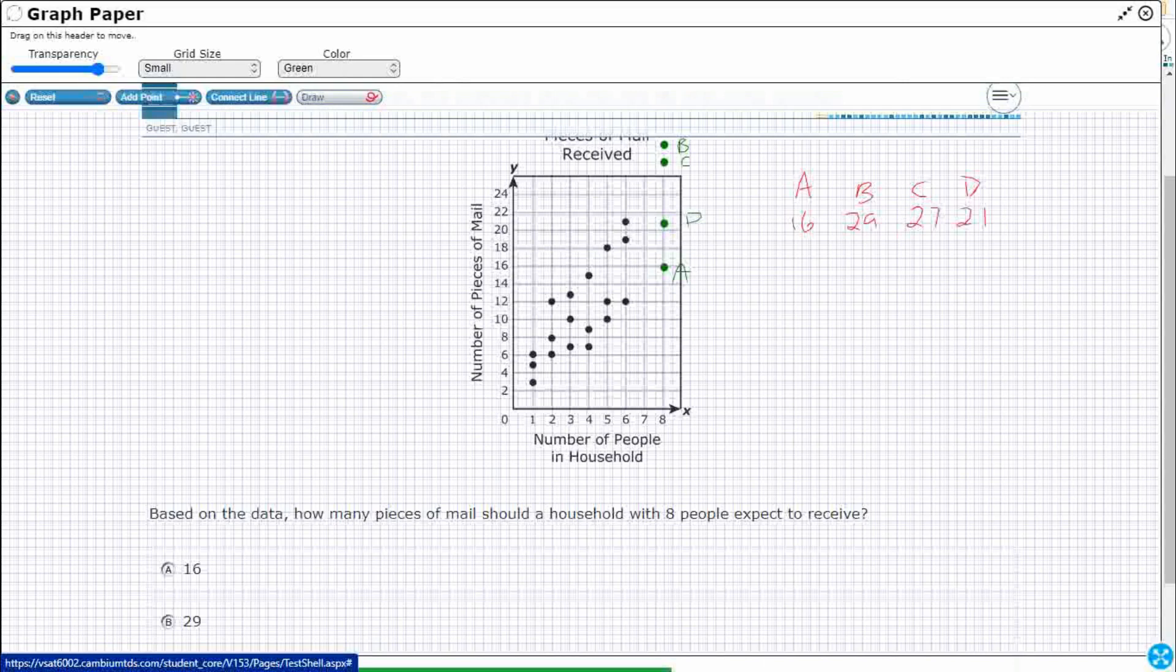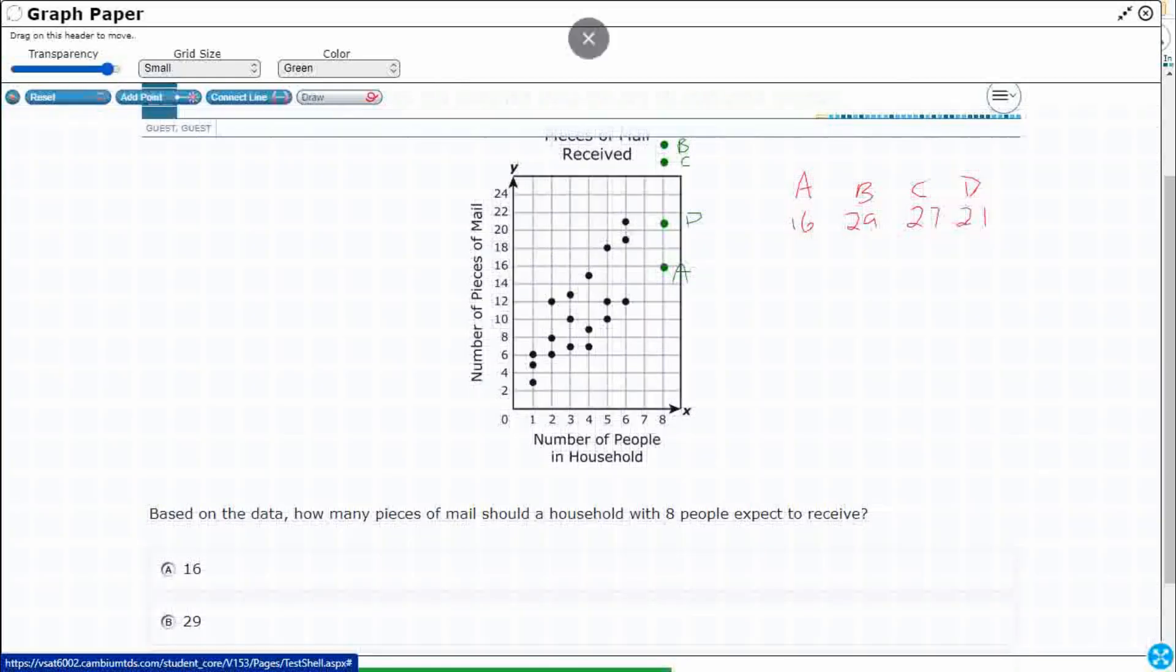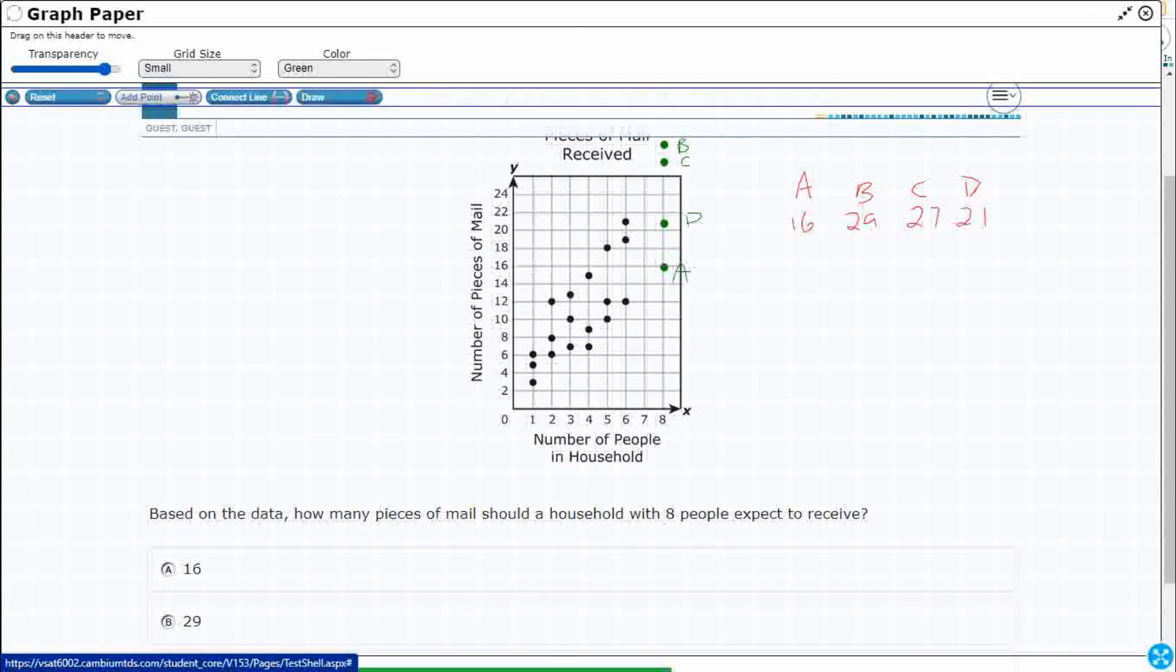What we need to do now is find a trend line. When we're looking at our trend line, first off, we need to make an assumption. We are going to start at the origin there at zero. It does make sense that if you've got zero people in the household, you've got zero pieces of mail coming. What we're going to do is take this connect line feature and try to draw a line.